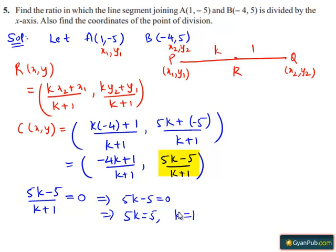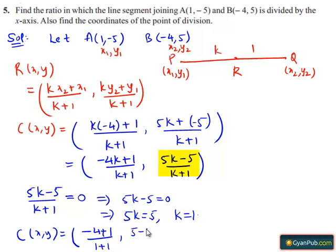Substituting k = 1, we get the coordinates of C as C(x, y) = ( (-4 + 1) / (1 + 1), (5 - 5) / (1 + 1) ), which equals ( -3/2, 0/2 ) = ( -3/2, 0 ).